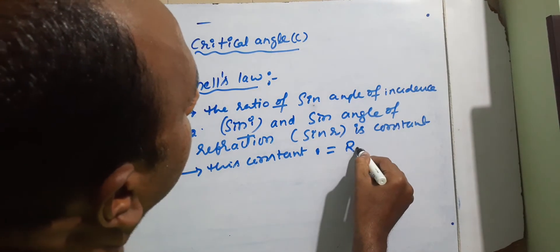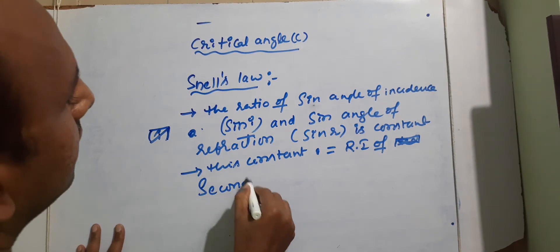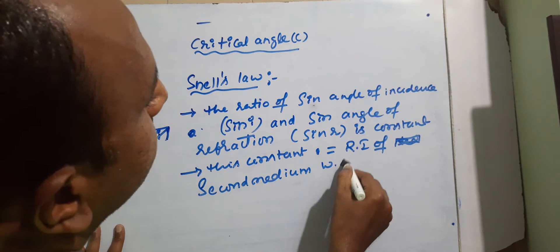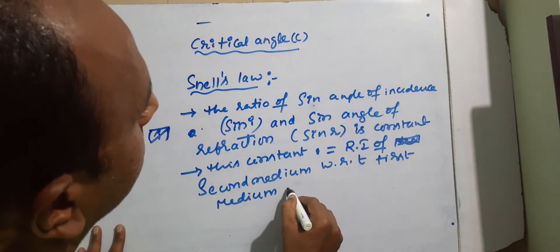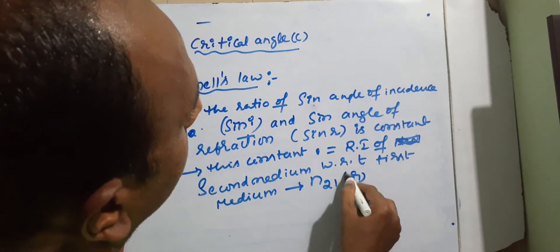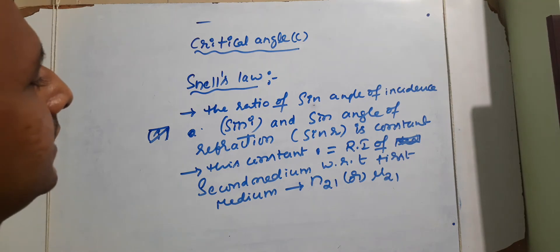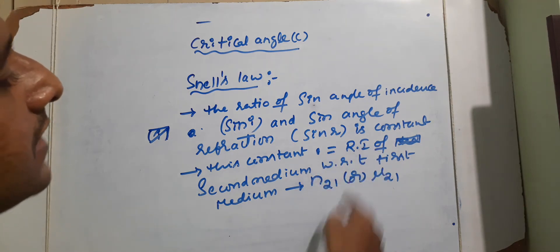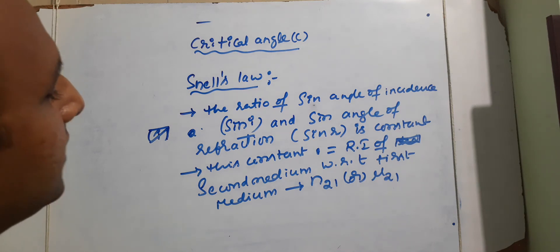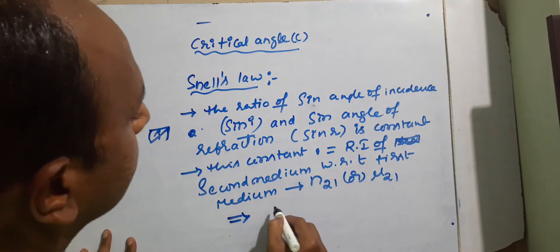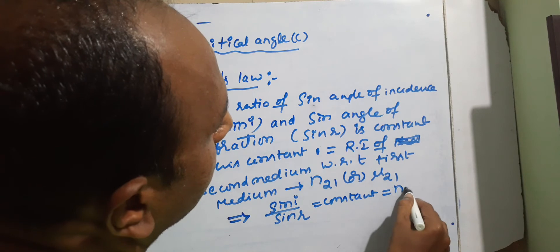This constant is equal to the refractive index of the second medium with respect to the first medium, denoted as n₂₁ or μ₂₁. So the ratio sin i / sin r is always constant, and that constant value is n₂₁. We can write the formula as sin i / sin r = n₂₁.